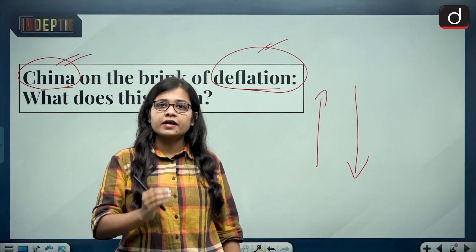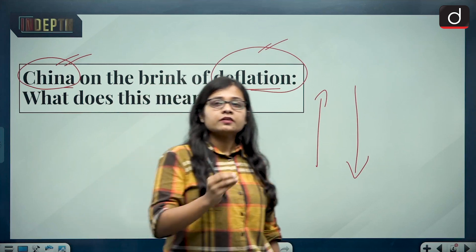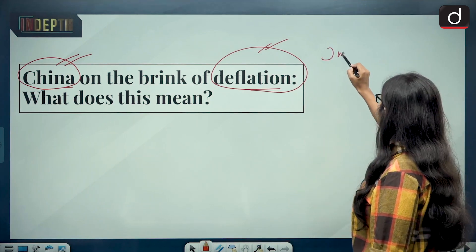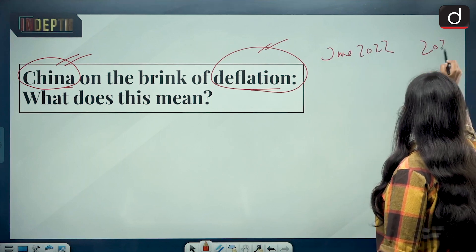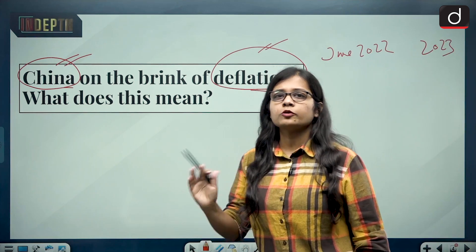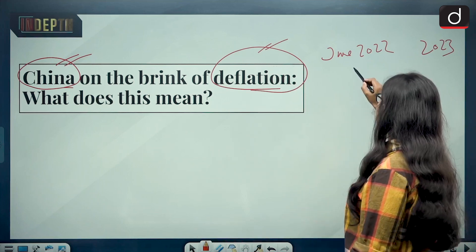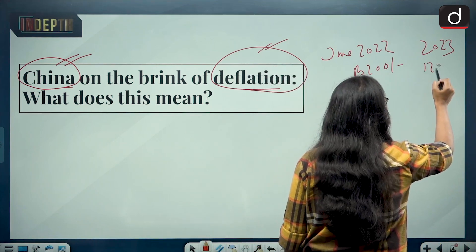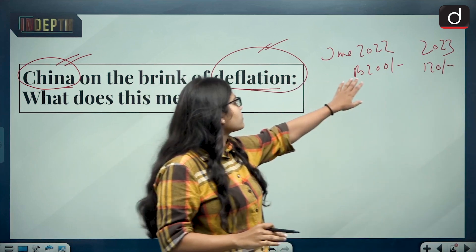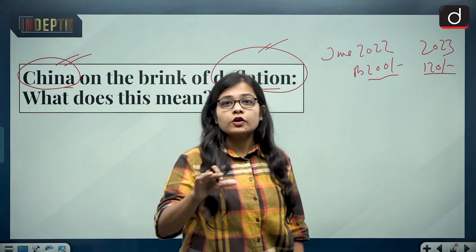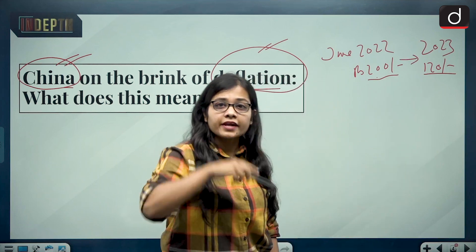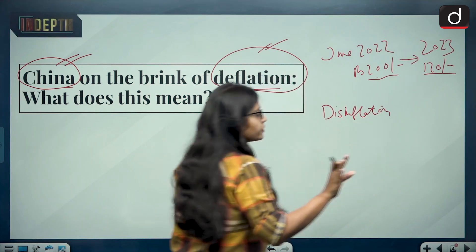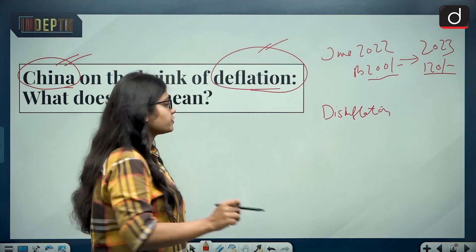When prices are declining, it is called deflation. For example, imagine in June 2022 the tomato price was 200 rupees, while in June 2023 the tomato price is 120 rupees — that decline is deflation. The rate at which deflation is taking place is called disinflation. So there are three words to be careful about before we move forward.